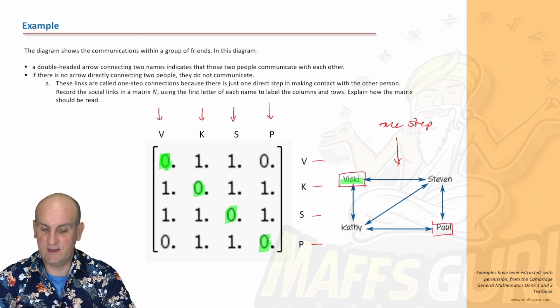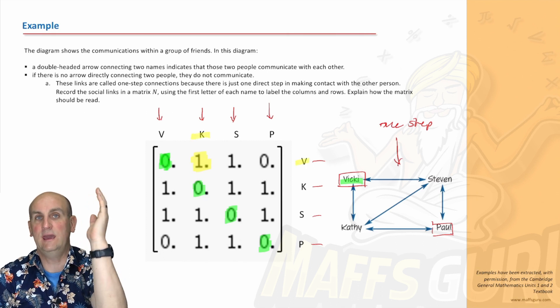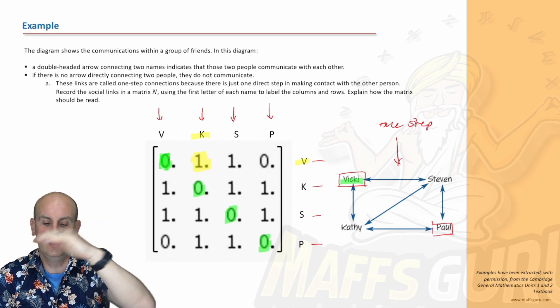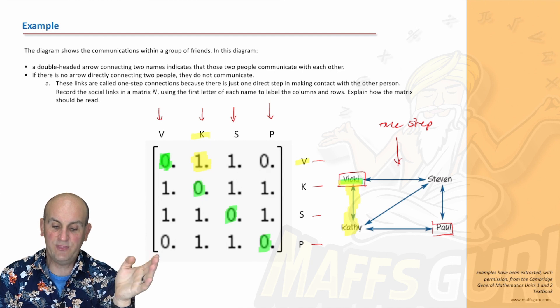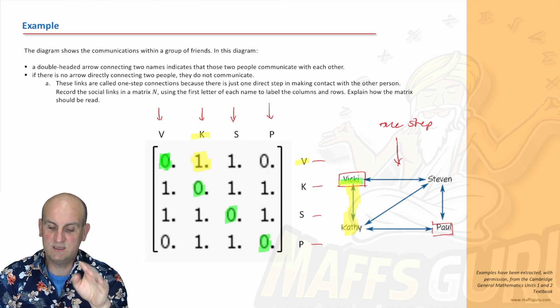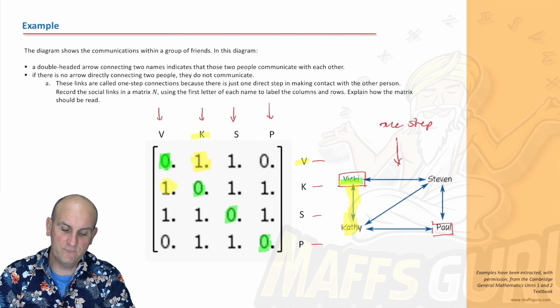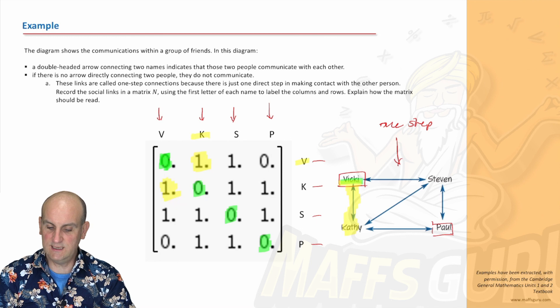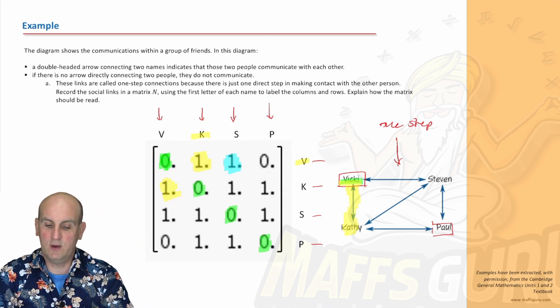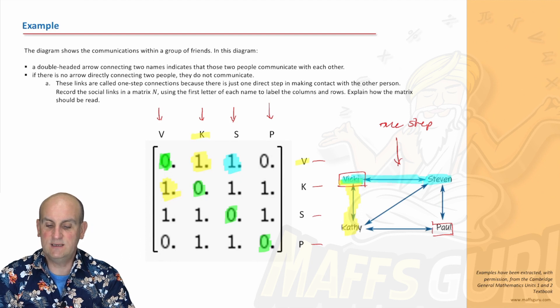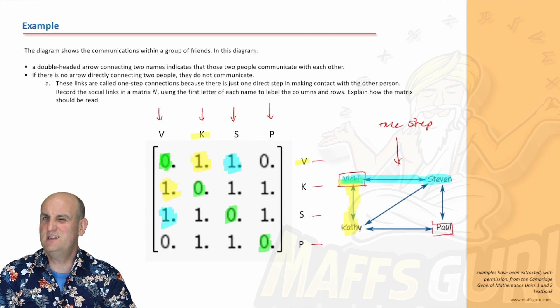Let's look at this one here highlighted in yellow, K. We've got K and V, on the K column and the V row. We're looking at, is there a connection between Kathy and Vicky? Yes there is. There's my connection, so that's why that's a one. But we also notice because the arrow is double-headed, it means Vicky talks to Kathy. Let's look at Stephen and Vicky. Is there a connection? Yes there is. Because it's a double-headed arrow, Vicky talks to Stephen.